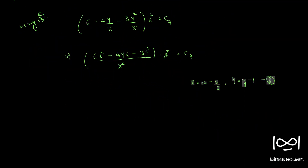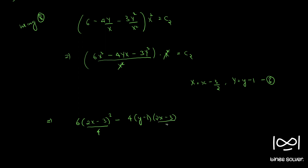Now we substitute X equal to x minus 3 by 2 and Y equal to y minus 1. We have terms like 2x minus 3 whole squared, minus 4 times y minus 1 times 2x minus 3 by 2, minus 3 times y minus 1 squared equal to c2.